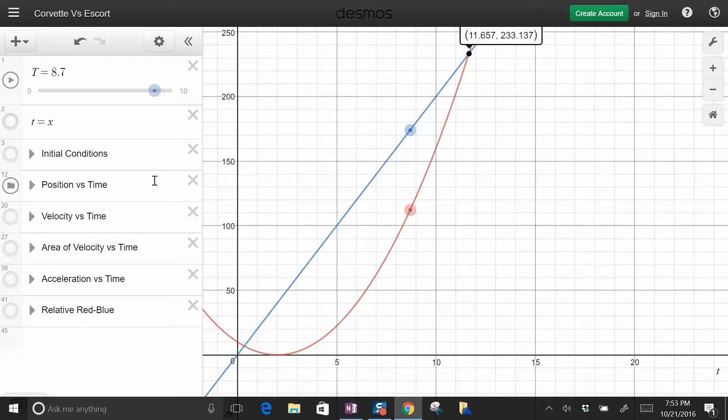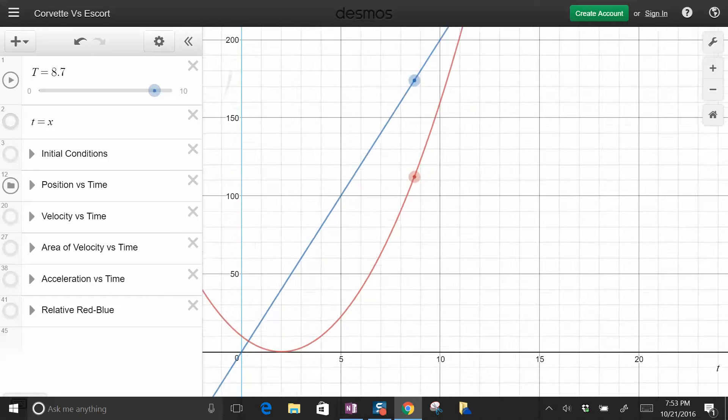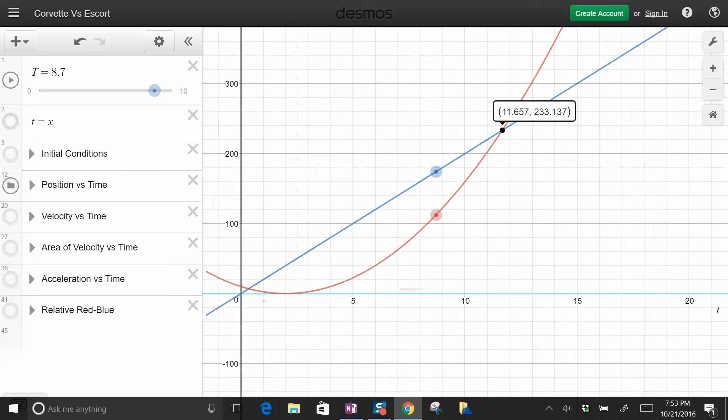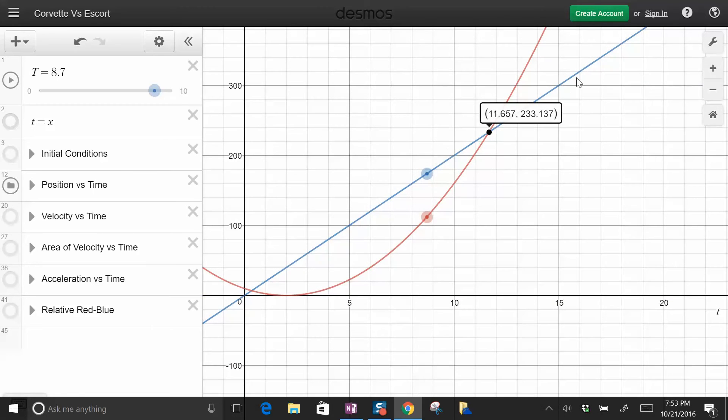So yeah, I had fun making that. Hopefully people find that useful. You can do train problems, approaching one another, going away, positive, negative acceleration, police car overtaking another car, and of course you can interact with it like this. So yeah, yet another Desmos, but it's that much fun.